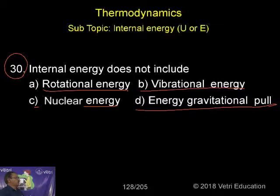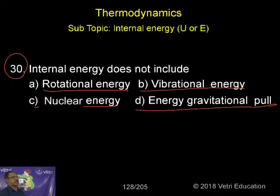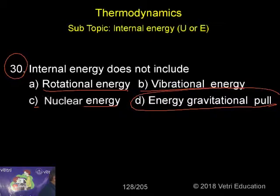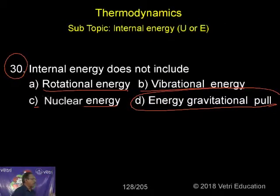If you calculate internal energy, the number of energy we are adding for total internal energy U — but in that case, the energy for gravitational pull will not come in the category. It does not include gravitational energy. So the correct answer is D.